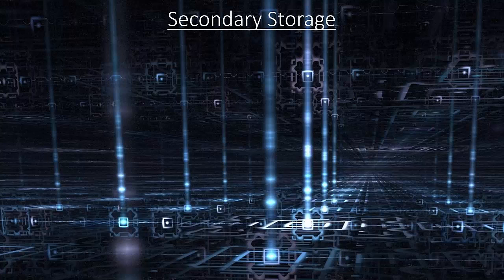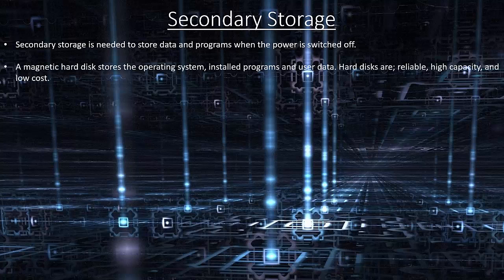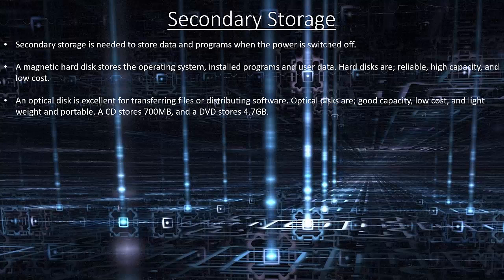Secondary storage. Secondary storage is needed to store data and programs when the power is switched off. A magnetic hard disk stores the operating system, installed programs and user data. Hard disks are reliable, high capacity and low cost. An optical disk is excellent for transferring files or distributing software. Optical disks are good capacity, low cost, lightweight and portable. A CD stores 700 MB and a DVD stores 4.7 GB.